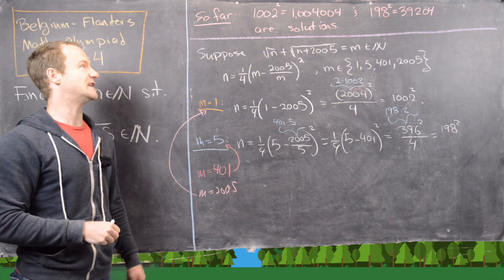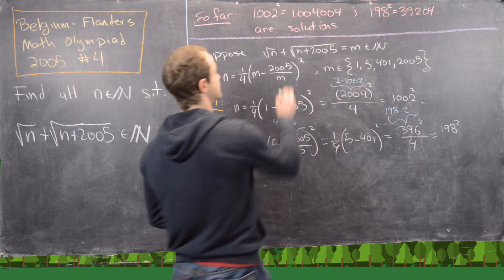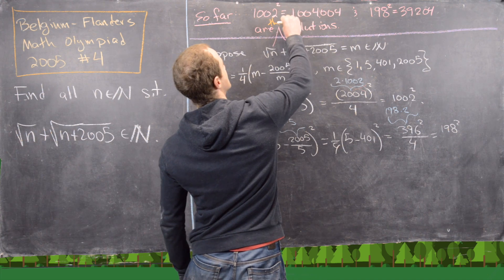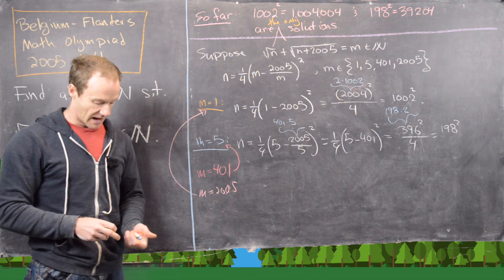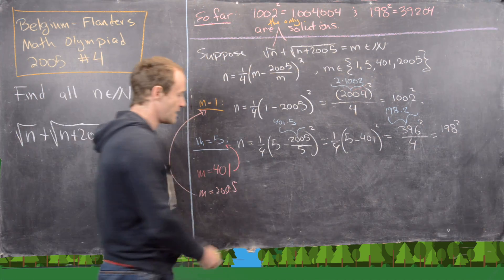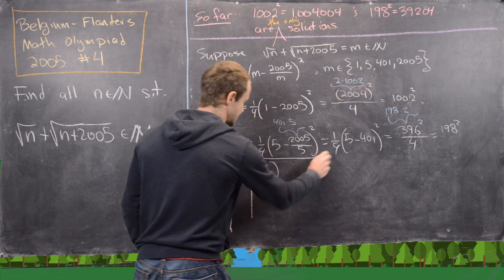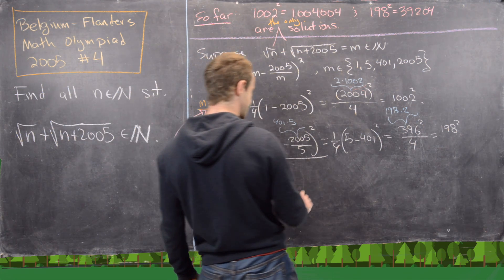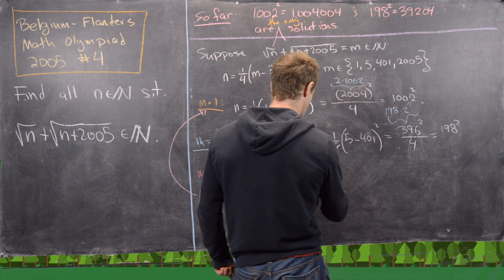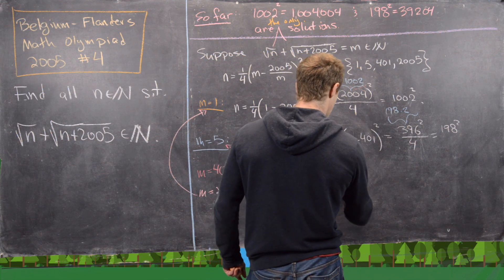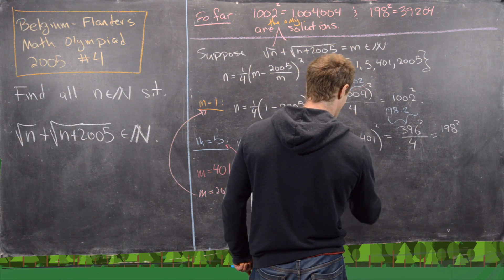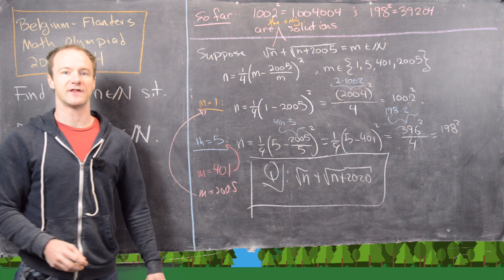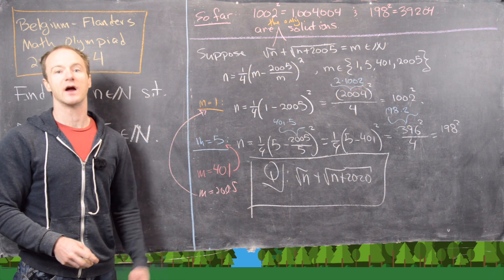So in fact, those are the only two solutions: n = 1002² = 1,004,004 and n = 198² = 39,204. As a bonus question for everyone: can we repeat this problem with √n + √(n + 2020), and what solutions do we get for that? Put your answer in the comments!